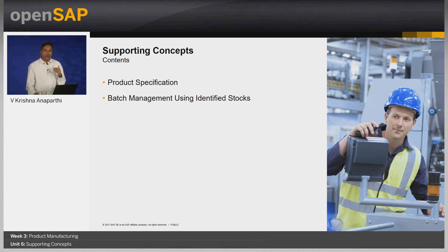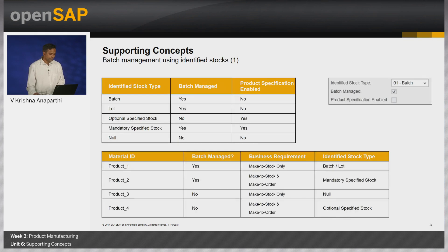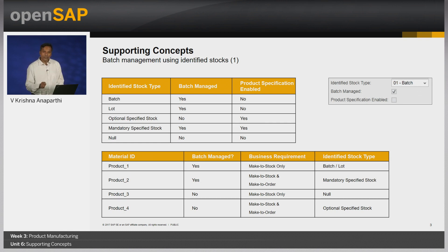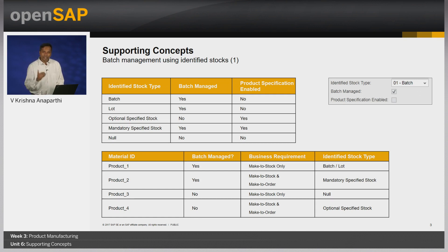Let us quickly discuss how to enable these features for a material. At a material master level, identified stock type is a field which not only allows the user to define the material as batch managed, but also allows the user to define if product specification is enabled for that material. It can primarily be set as batch, lot, optional specified stock, or mandatory specified stock, or it can be left blank. If the type is batch or lot, then the material is batch managed but product specification is not enabled.